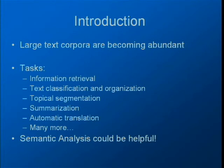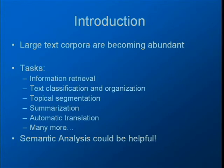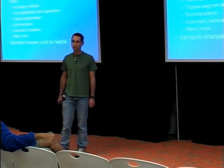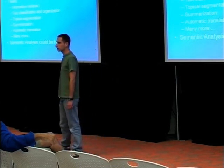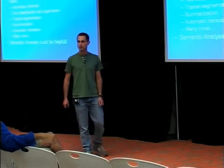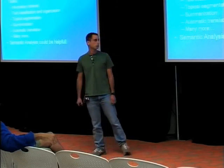There are many texts out there and many things we might want to do with them. One is information retrieval — we have a query and a set of documents, and we want to retrieve the most relevant documents. Another problem is automatic classification and organization of texts. For example, it would be useful if an automatic tool could decide whether an email is spam or something we actually want to read, or sort emails into folders automatically without predefined explicit rules.